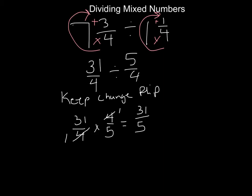Now we can't keep our fraction this way, we need to turn it back into a mixed number. You can do that by division, or you can simply say okay, 5 goes into 31 six times which is 30 with one left over.